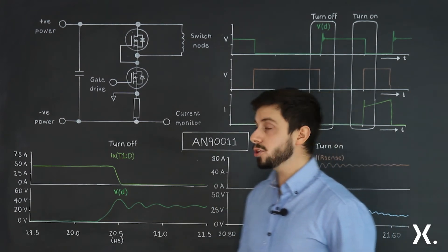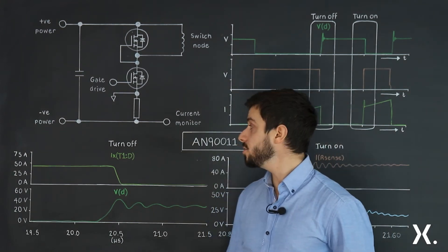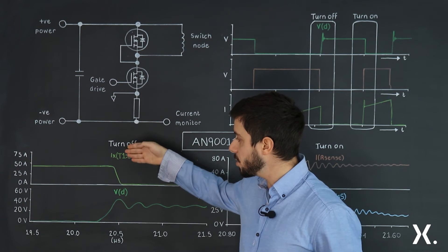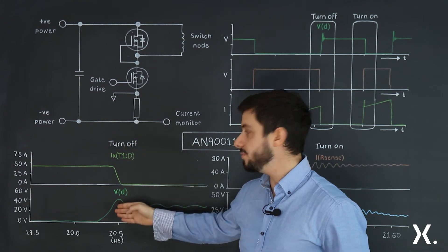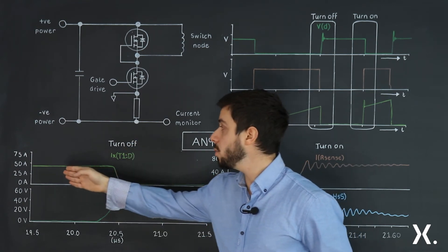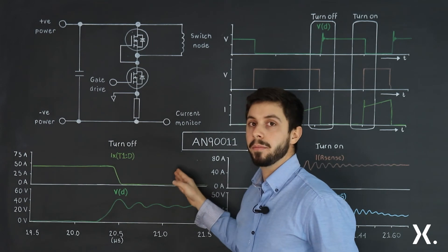In order to find the turn off energy, one would need to multiply the current by the voltage and integrate them over the turn off period.